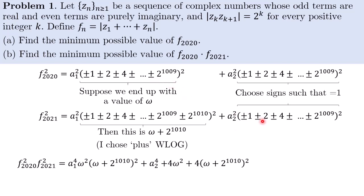And now we have the cross terms. We know that a1 squared times a2 squared is 4. So the cross term is 4 times omega squared. We have the other cross term which is 4 times (omega + 2^1010)^2.